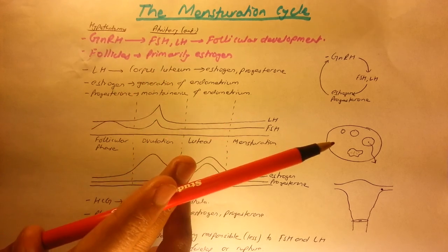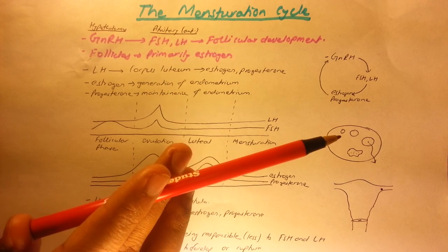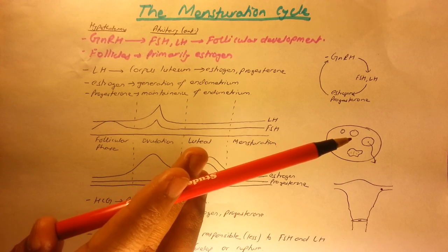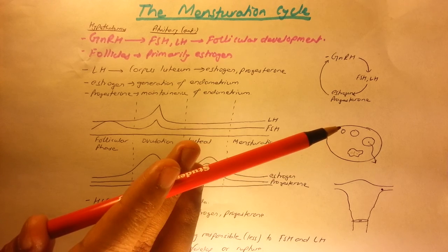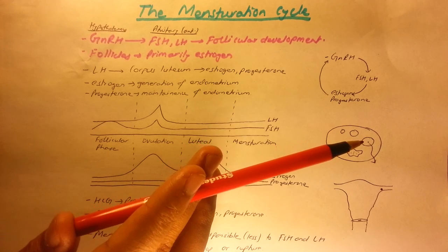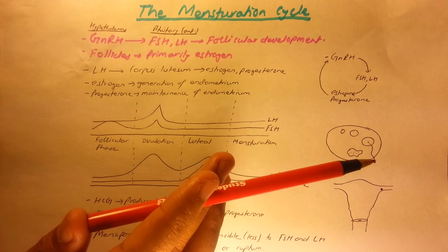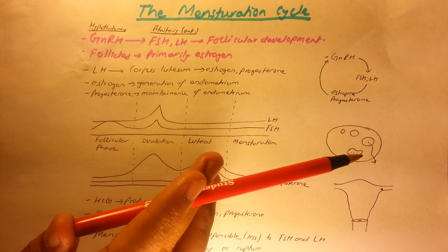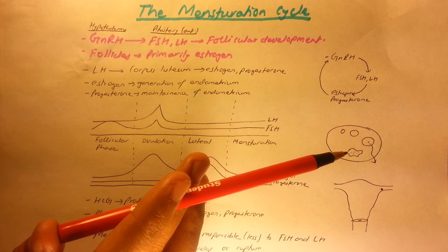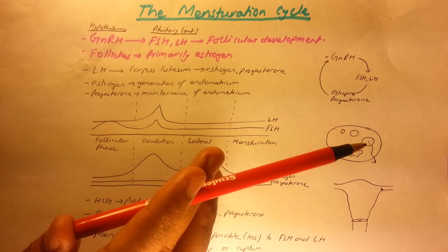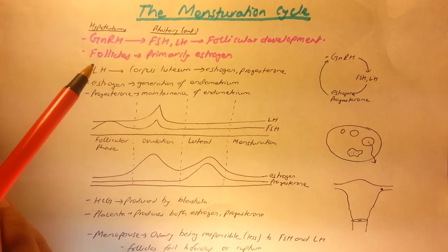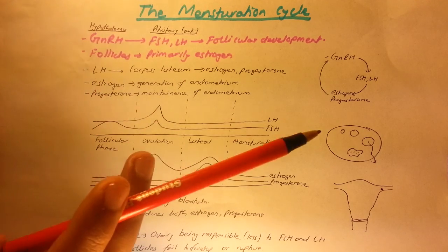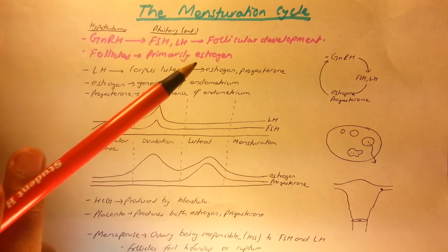The follicle-stimulating hormone and luteinizing hormone in turn affect the ovary to develop follicles. The follicle contains an egg, and as the follicles are developing, the egg becomes more mature. At one point, the follicle ruptures and the egg is released. The structure that forms after the follicle ruptures is called the corpus luteum, and it is maintained by luteinizing hormone. These follicles primarily produce estrogen only.